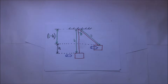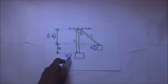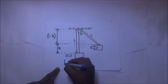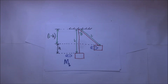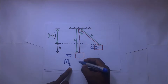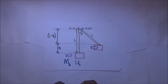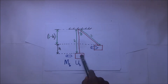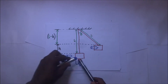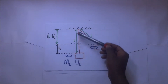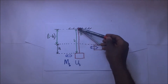The ballistic pendulum is a device used to determine the speed of a bullet. The bullet has a mass M subscript B and hits the block with an initial velocity U subscript B. The block is initially stationary, so its initial velocity is zero. When they collide, they move together to a certain height H, and the string tied to the block has length L.